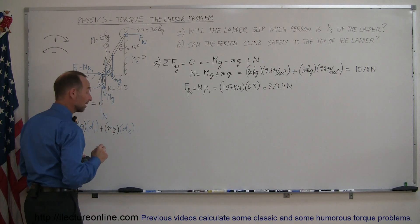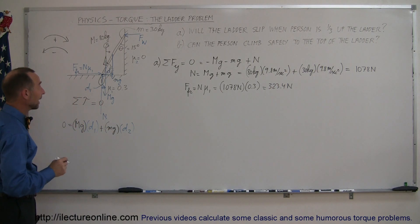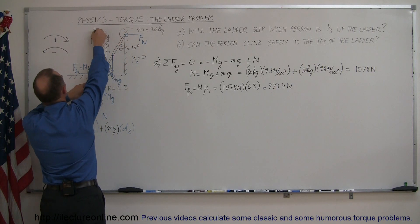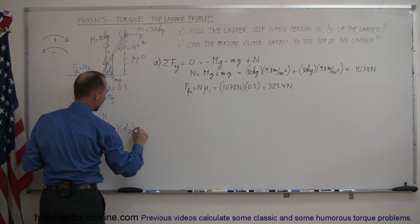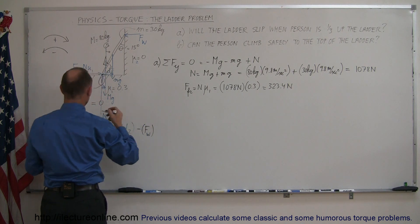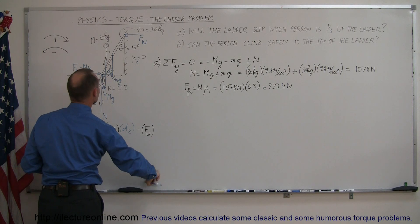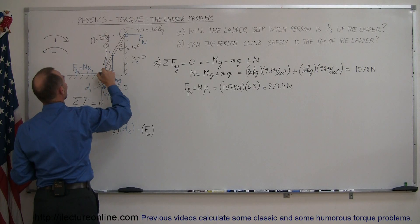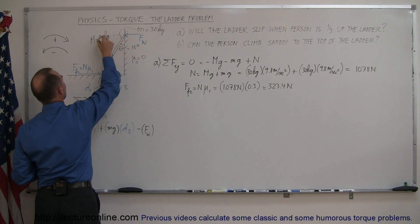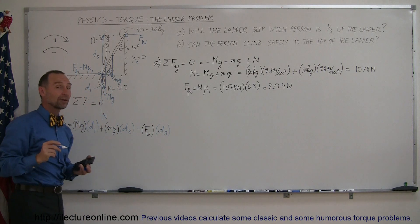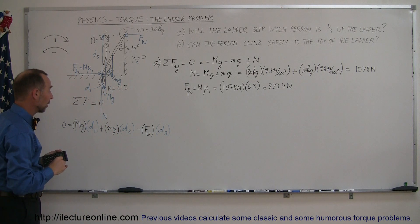We're adding those torques together and they're both positive. Next, we have the force of the wall on the ladder, which causes the ladder to rotate in a counterclockwise direction — so that's minus the force on the wall — multiplied by distance D3, the perpendicular distance from the pivot point to the line of action of the wall force.